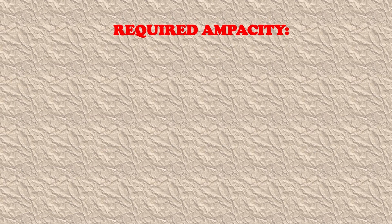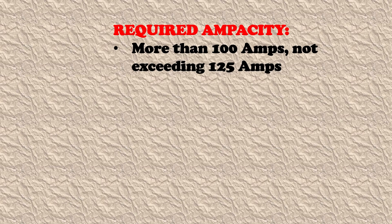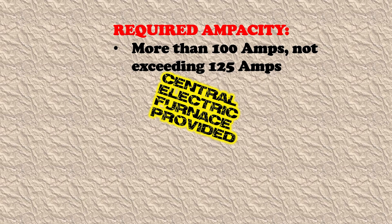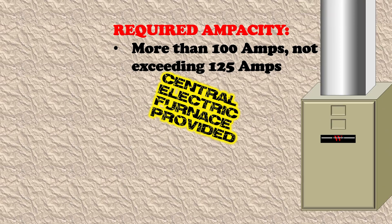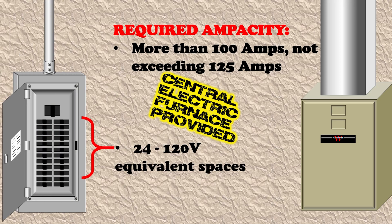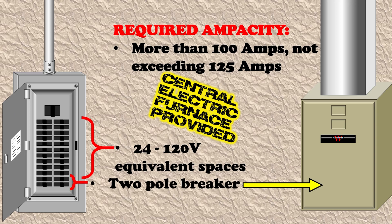In this next example, our required ampacity is more than 100 amps but not exceeding 125 amps inclusive, and a central electric furnace is provided. If a central electric furnace is provided, we once again only require 24 of those 120-volt single pole equivalent spaces. The idea being that this central electric furnace only requires a two-pole breaker to supply it, therefore not needing the extra spaces that would be required if we don't have the central electric furnace provided for.